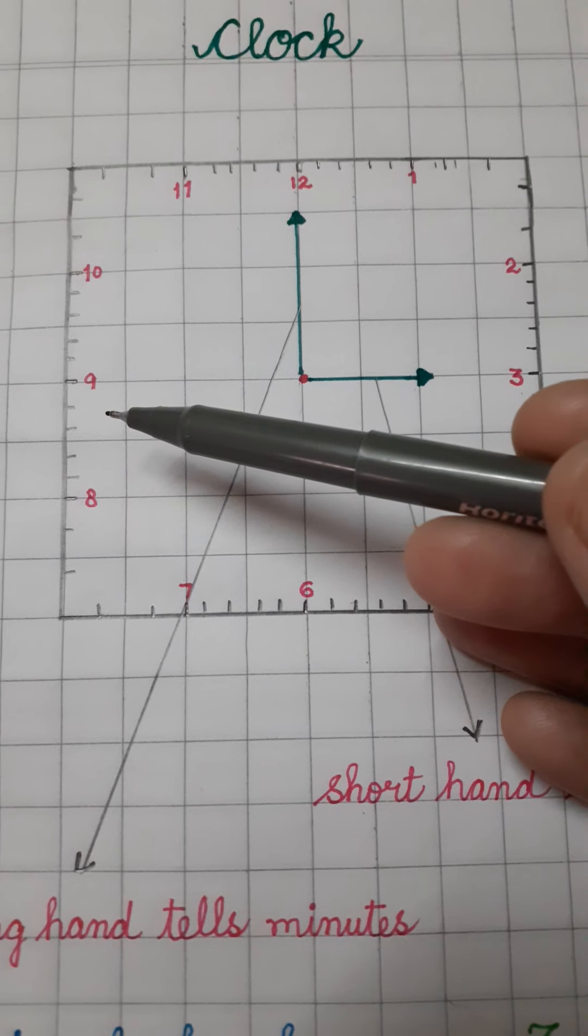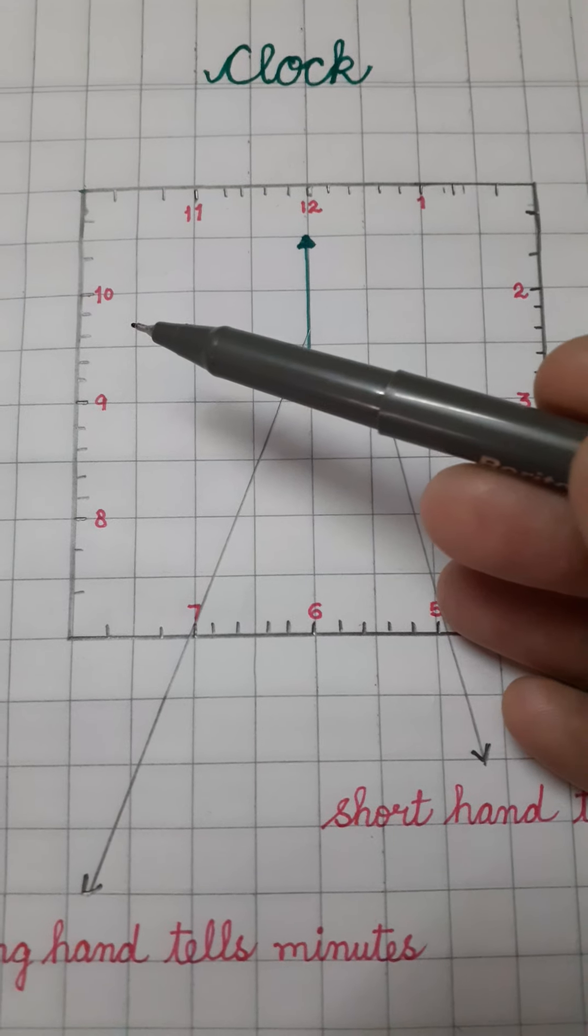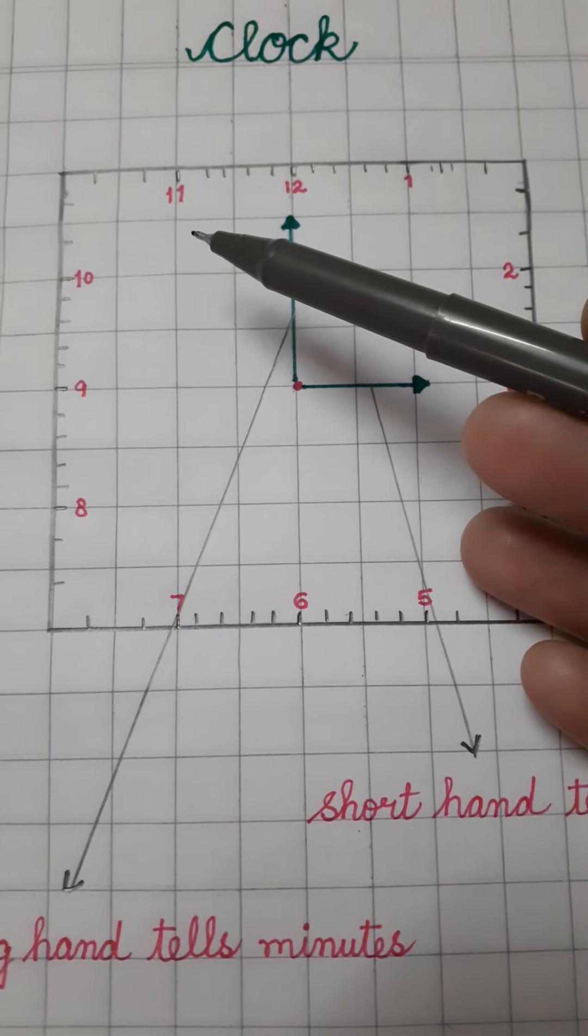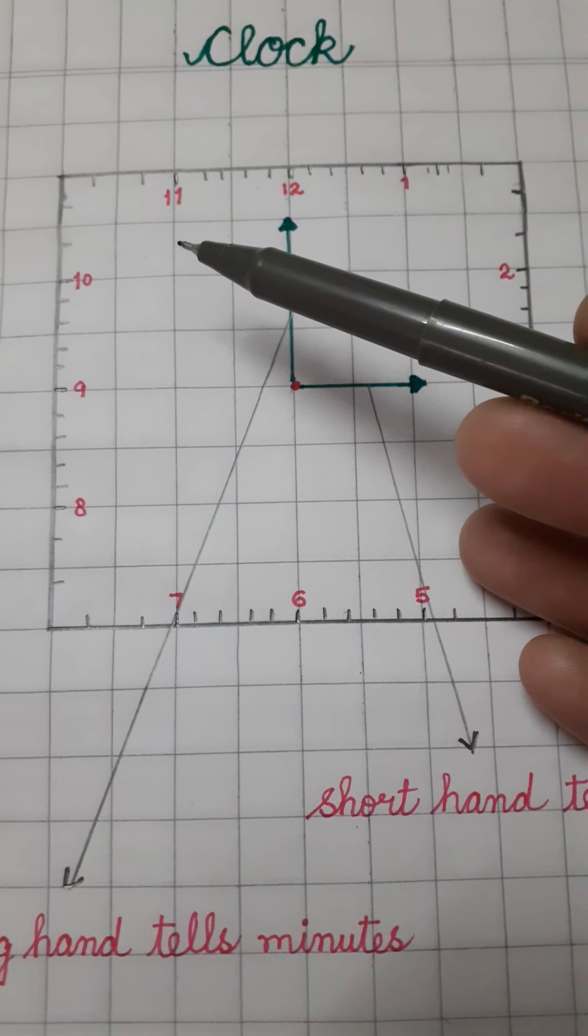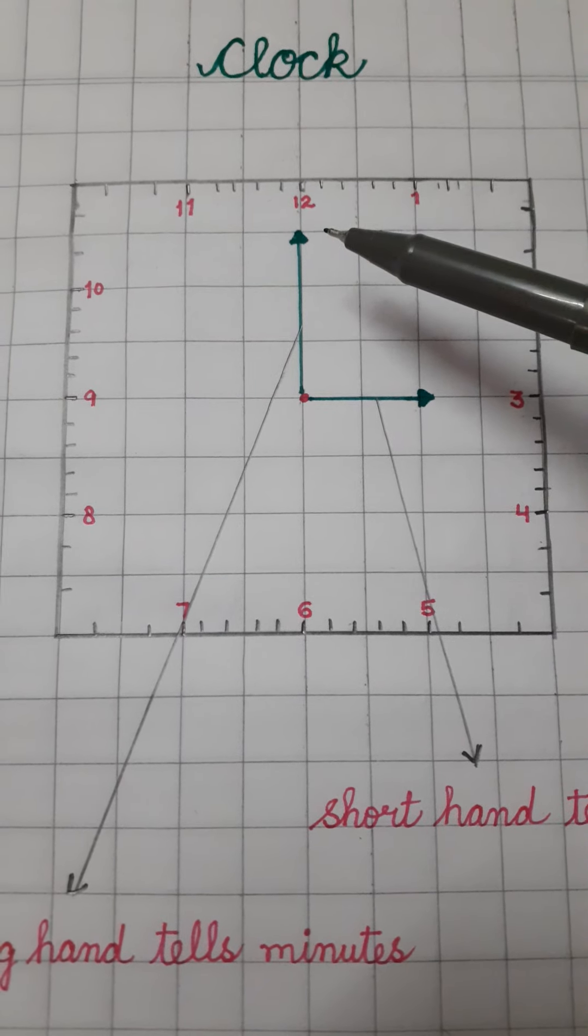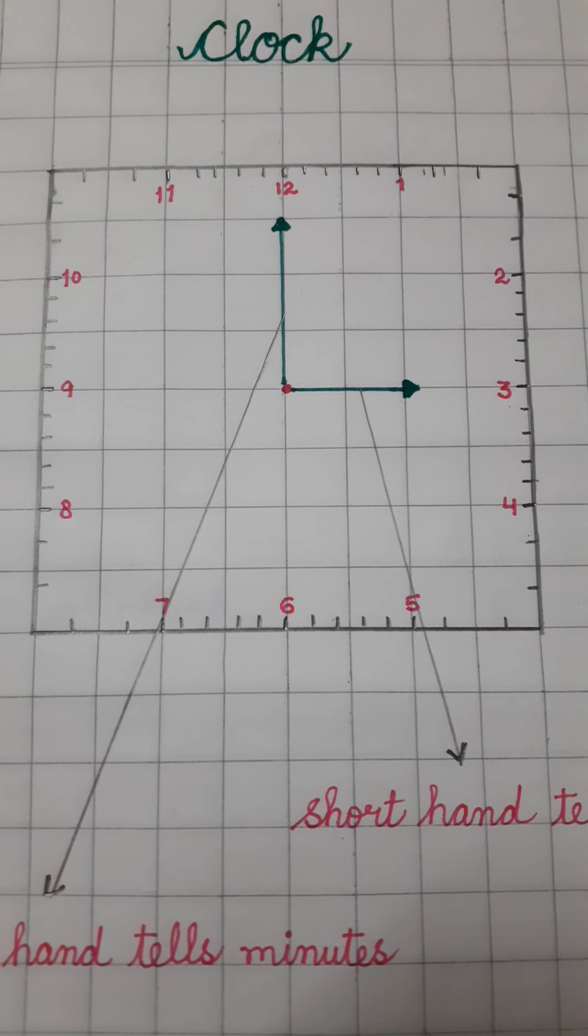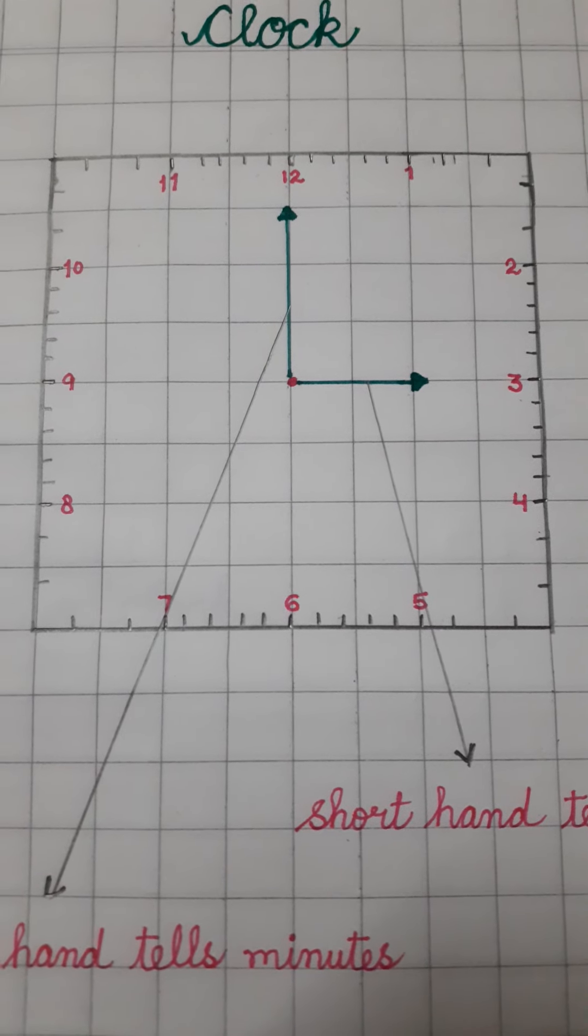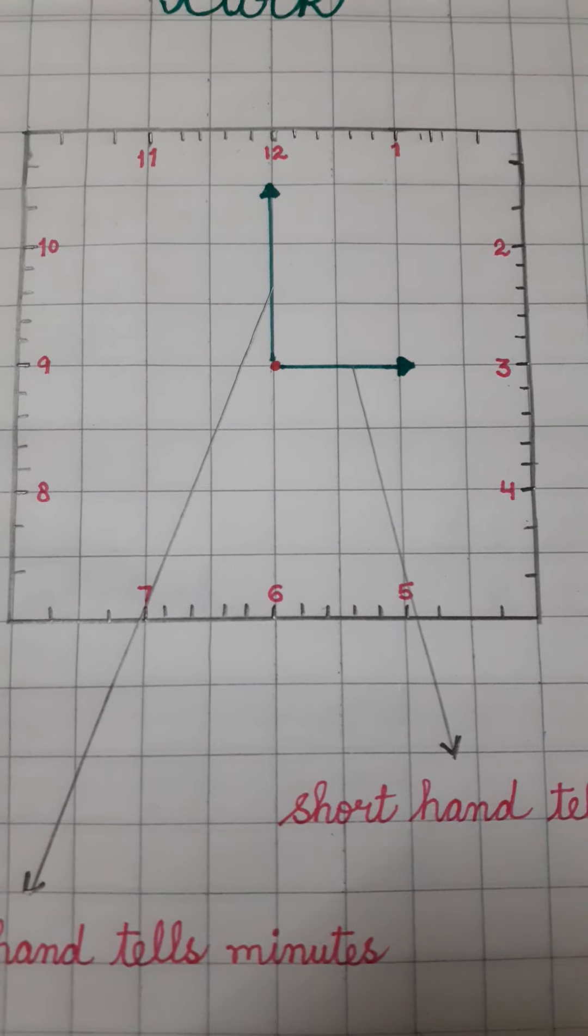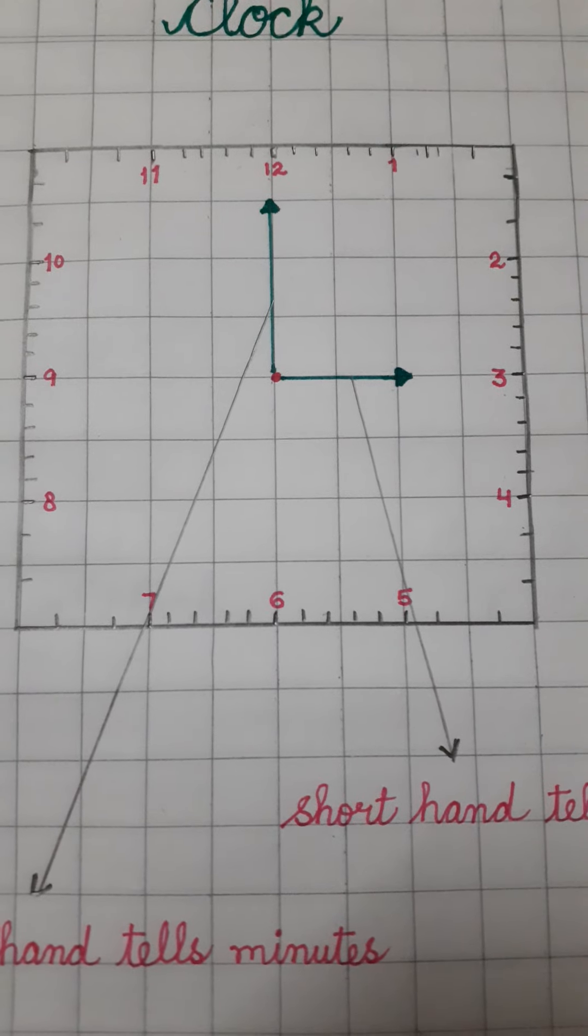9 पे होतो 5, 9s are 45, 45 minutes. 10 पे होतो 5s are 50, 50 minutes. 11 पे होतो 5s are 55, 55 minutes. और 12 पे होतो 12, 5s are 60. I have told you, 1 hour is equal to 60 minutes and 1 minute is equal to 60 seconds. याद हैन आपको? Yes, you have remembered this.